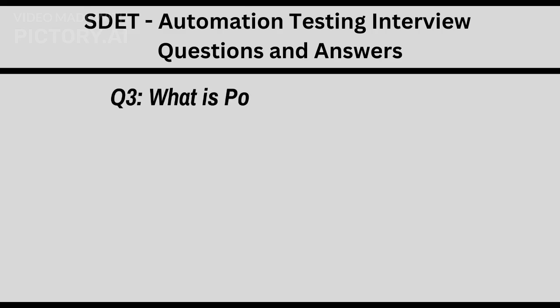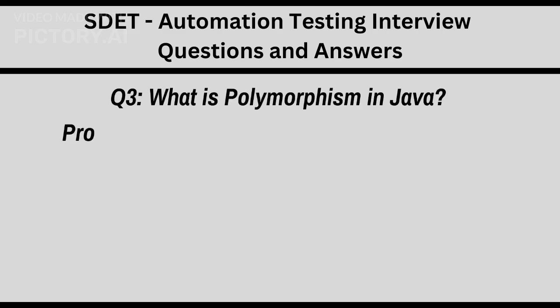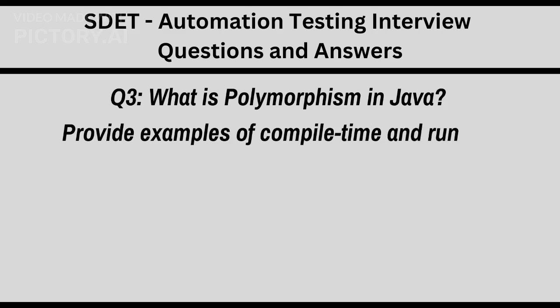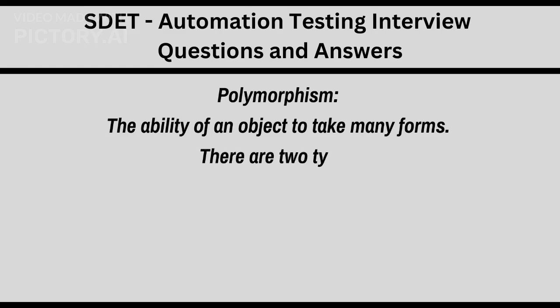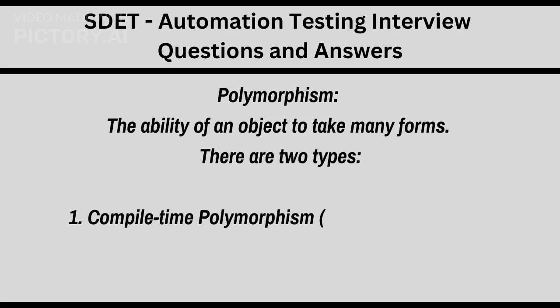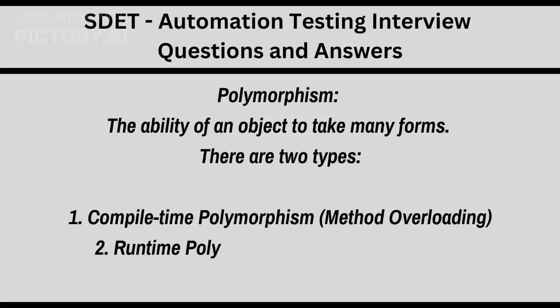Q3. What is polymorphism in Java? Provide examples of compile-time and runtime polymorphism. Polymorphism is the ability of an object to take many forms. There are two types: 1. Compile-time polymorphism — method overloading. 2. Runtime polymorphism — method overriding.